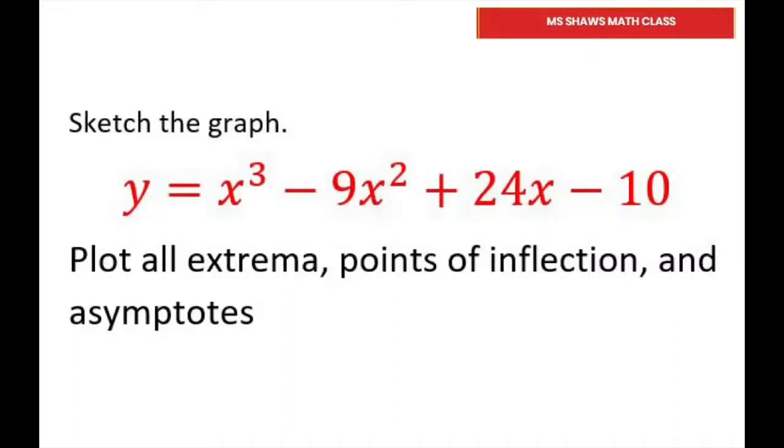Hi everyone! We're going to sketch this graph. It's a polynomial so it won't have any horizontal or vertical asymptote. It's going to be smooth and continuous for a polynomial, so we don't need to worry about asymptotes here.